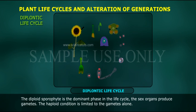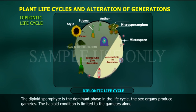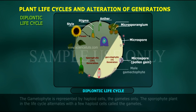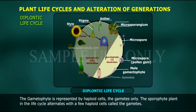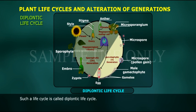2. Diplontic Life Cycle: The diploid sporophyte is the dominant phase in the life cycle. The sex organs produce gametes, and the haploid condition is limited to the gametes alone. The gametophyte is represented by haploid cells, i.e., gametes only. The sporophyte plant in the life cycle alternates with a few haploid cells called gametes. Such a life cycle is called the diplontic life cycle.